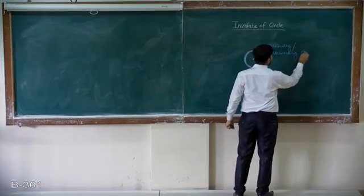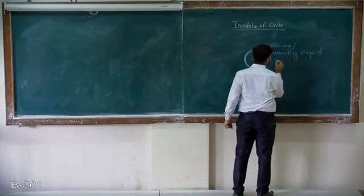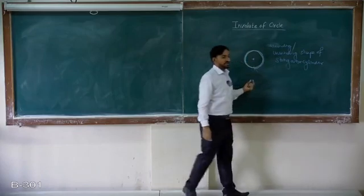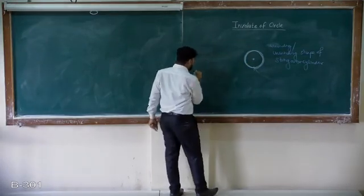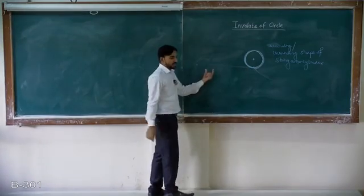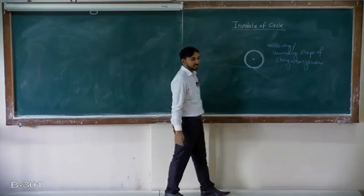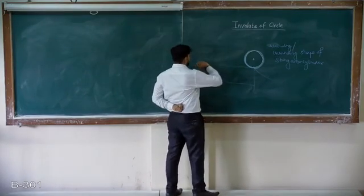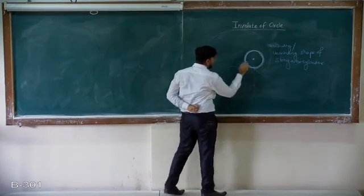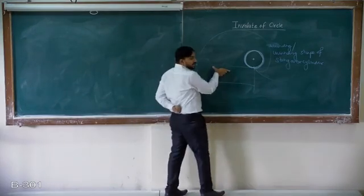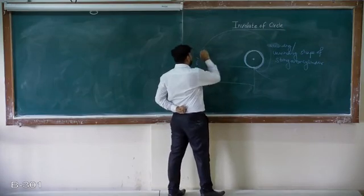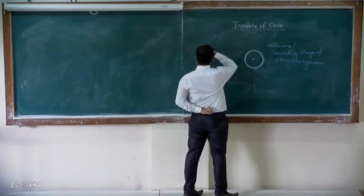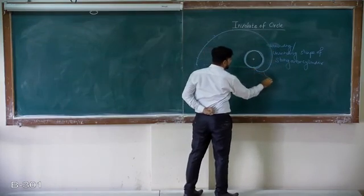The winding and unwinding shape of the string over a cylinder is defined as the Involute. Simply, if I have a cylinder and the length of string is equal to the circumference of the circle (π×d), then the path covered by the other end when wound around the base — always keeping this path tangential to the circular base — will give a curve. That curve is the Involute.